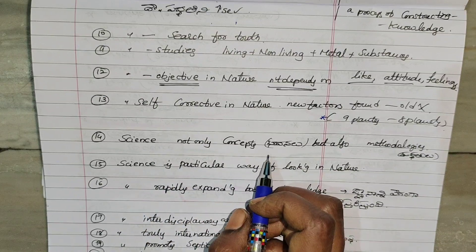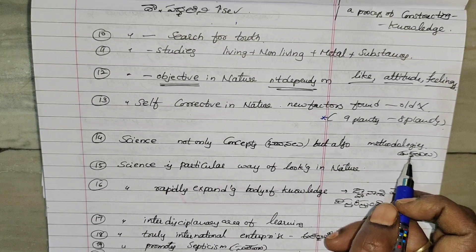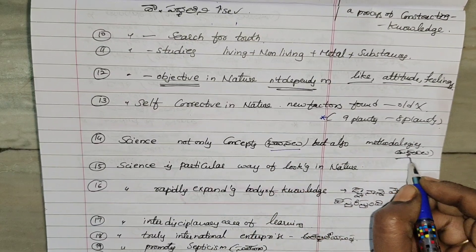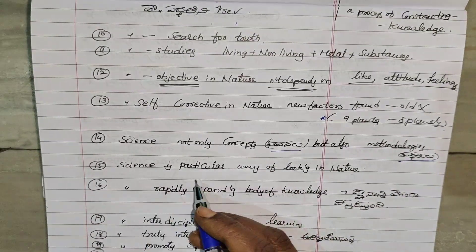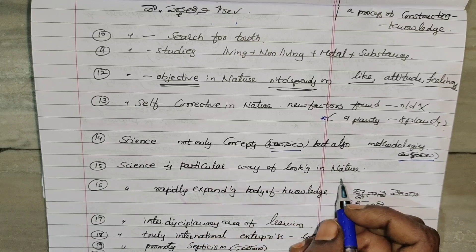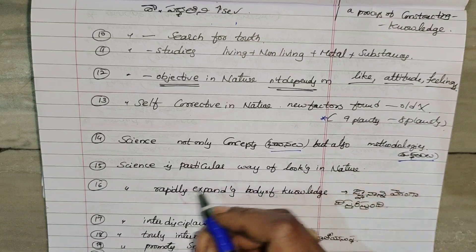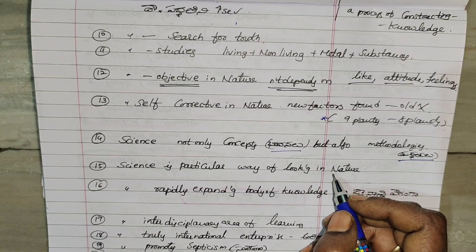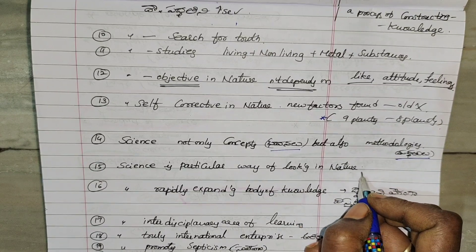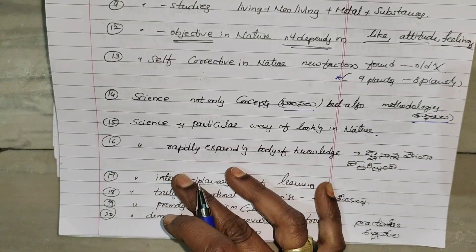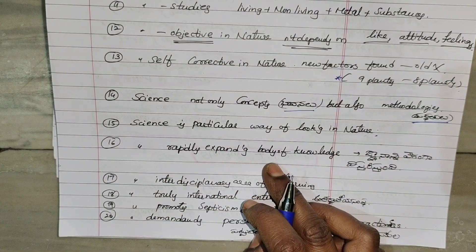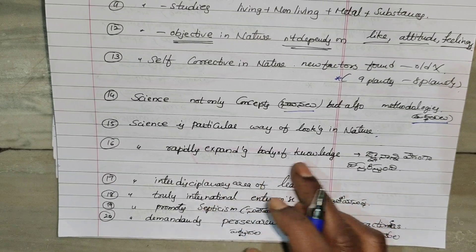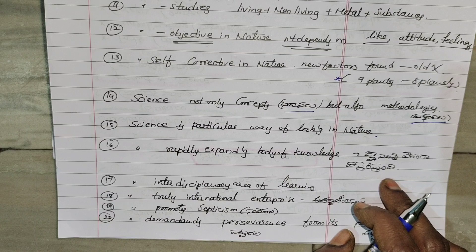Science not only covers concepts but also methodologies. Science is a particular way of looking at nature — it is a body of knowledge.